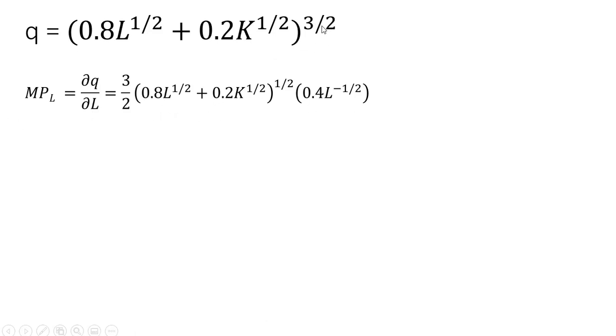The 3/2 comes down in front, and subtracting 1 from it leaves us with the power of 1/2. Then we look inside the parentheses and take the derivative with respect to labor. Doing that, we get 0.4L raised to the -1/2 power.